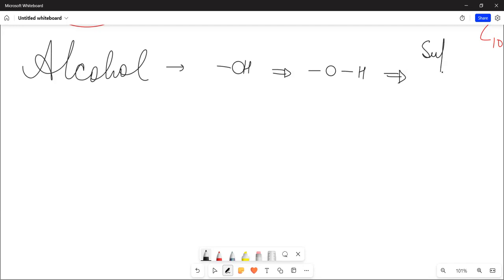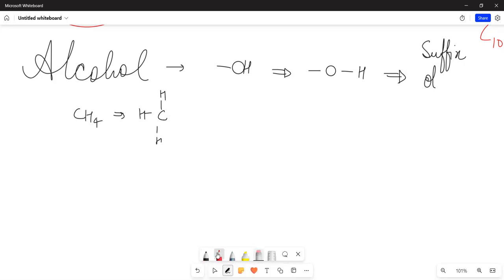And this suffix is 'ol'. That means we will start with 'ol'. This is methane. Methane, how many bonds? 1, 2, 3, and 4. Now I have eliminated this hydrogen. In this place, what has been put? OH has been put. What is carbon 1? What has been put in the name? Methanol.